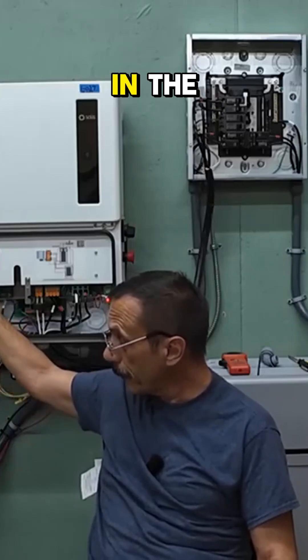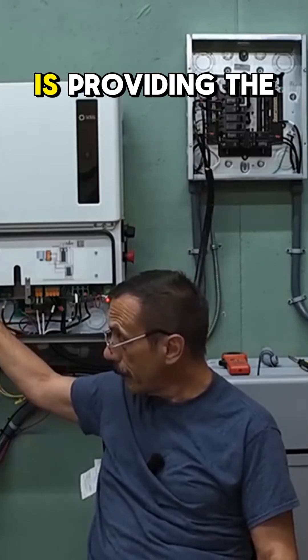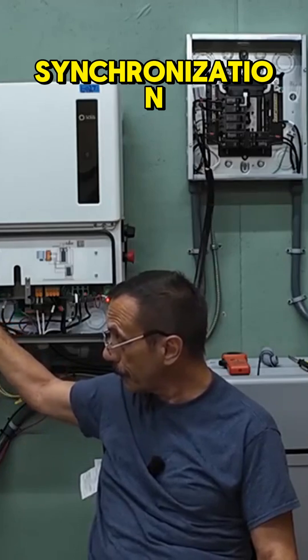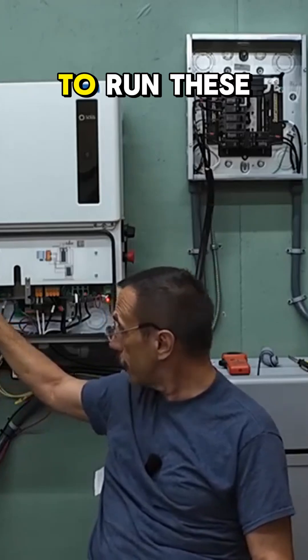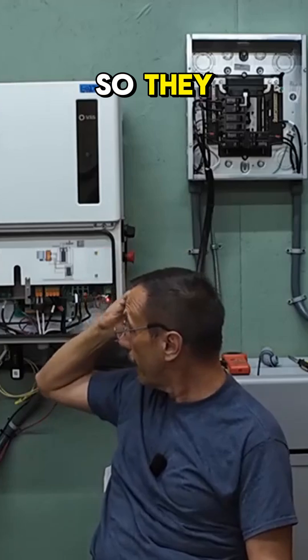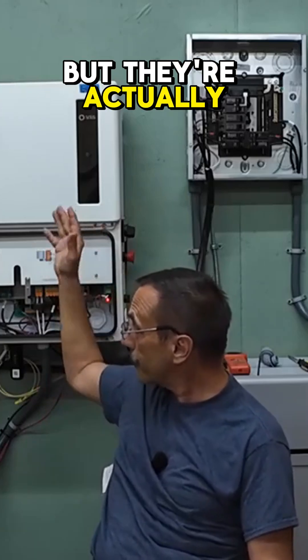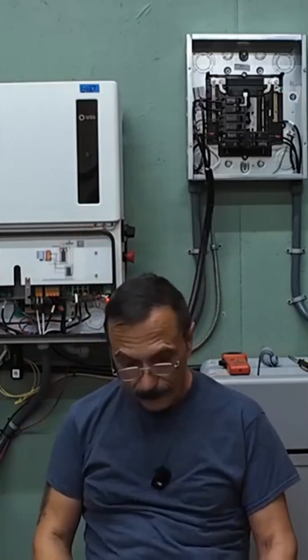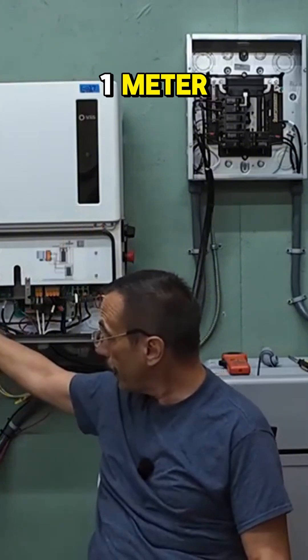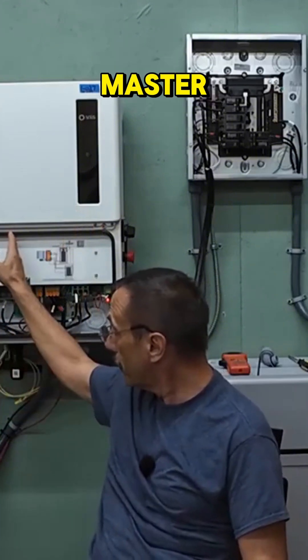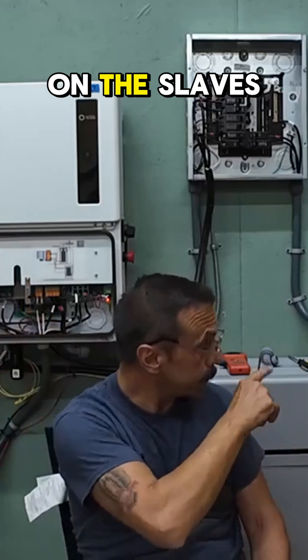My main inverter in the solar shed is providing the 60 hertz synchronization to run these two inverters. They think they're on grid, but they're actually off grid. So you only need one meter connected to the master. You don't put a meter on the slaves.